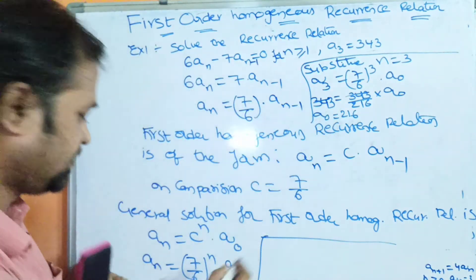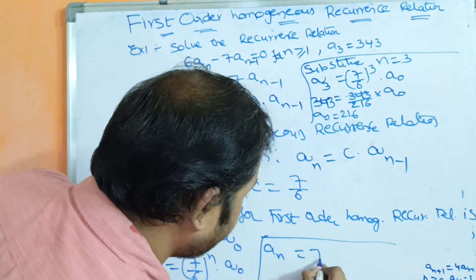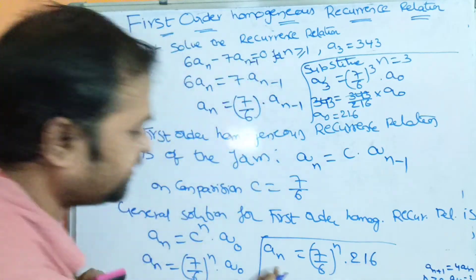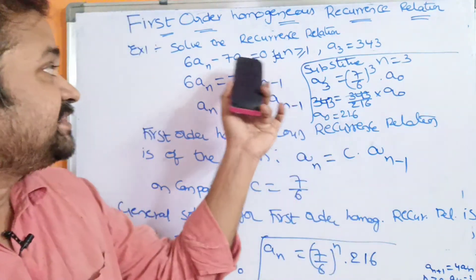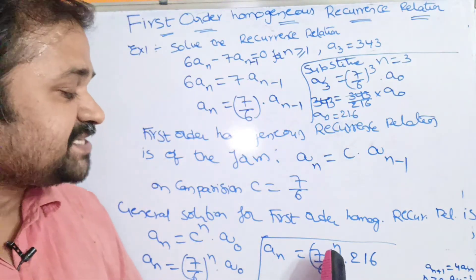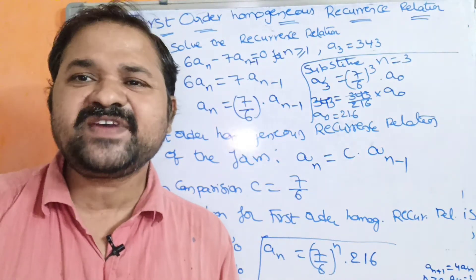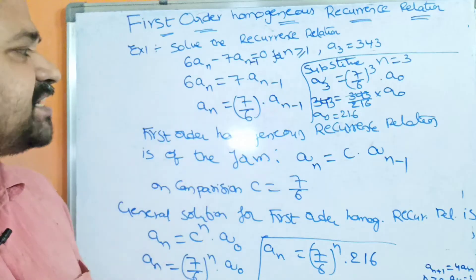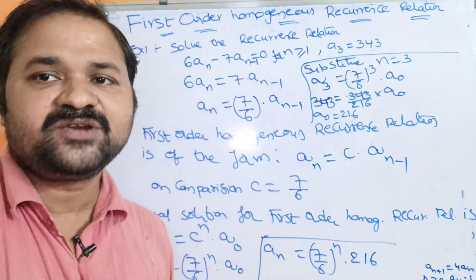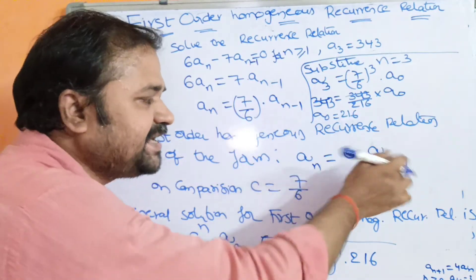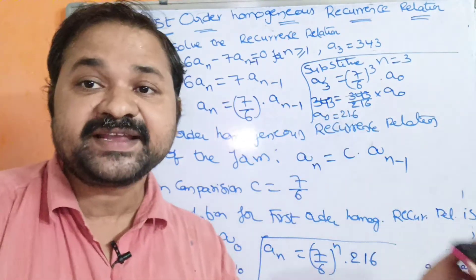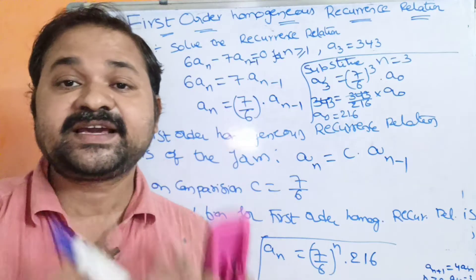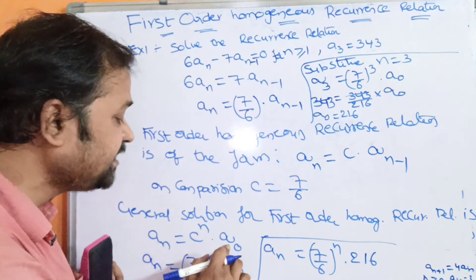Substituting A0 = 216, the general solution becomes AN = (7/6)^N · 216. This is the general solution for this recurrence relation. To summarize: convert the equation to the form AN = C·AN−1, identify C, then use the formula AN = C^N · A0.